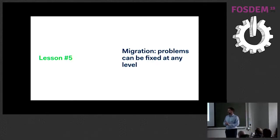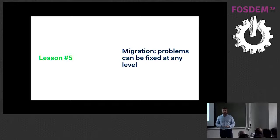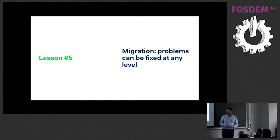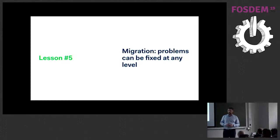Another realization is that problems due to migration can be fixed at different levels. When we first tried to migrate, the outcome had many errors and we were trying to improve the migration tool with more complex scenarios to catch all edge cases. At some point we decided it was also possible to change the content in the original system. Because technical writers and developers sit in the same room, every time we see a problem we can decide: do we need to write specific code to solve this case, or should we just fix it at the content level?